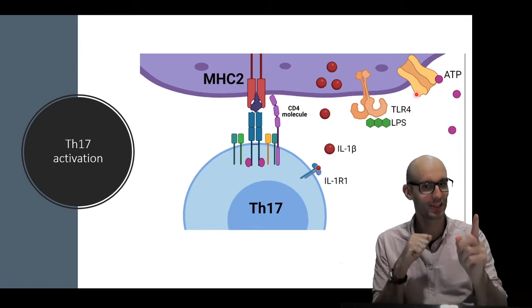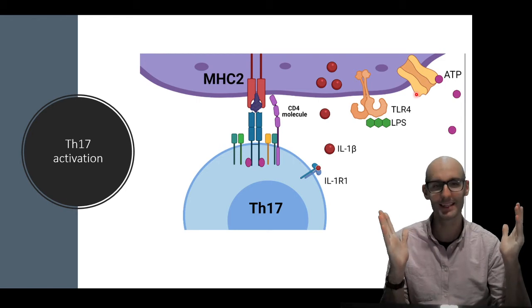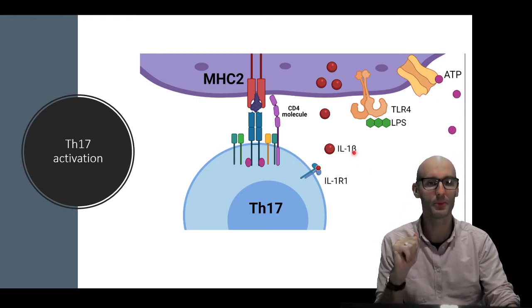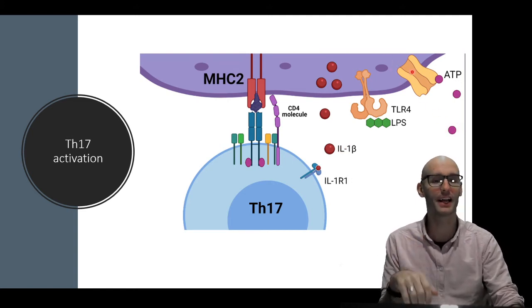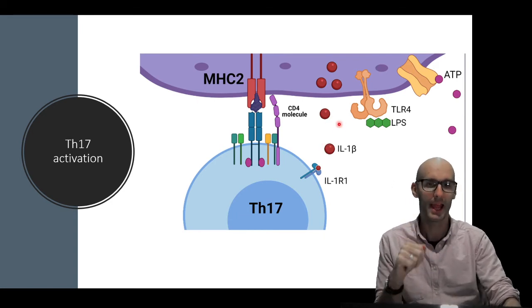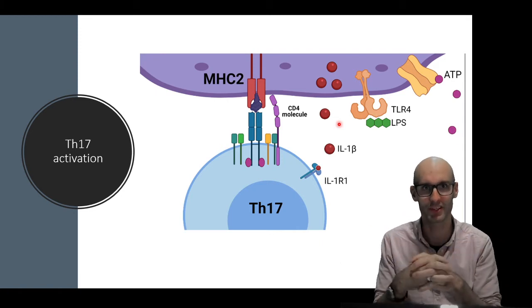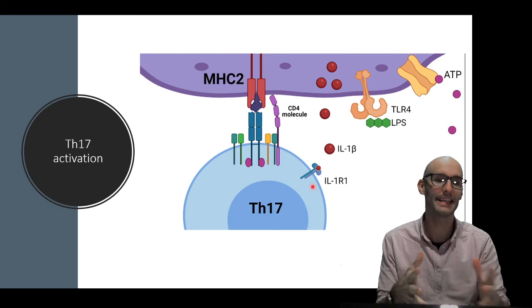Interleukin-1. Interleukin-1 beta. So interleukin-1 beta, it's number one for a reason. This could actually also be interleukin-1 alpha, that would be caused by calcium influx. But anyway, interleukin-1 will come out of this macrophage, and interleukin-1s, both of them, are the most powerful inflammatory cytokines we've got.